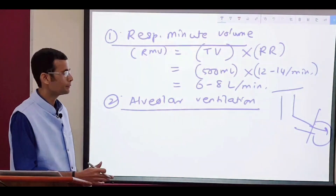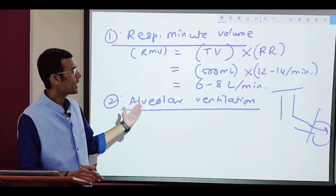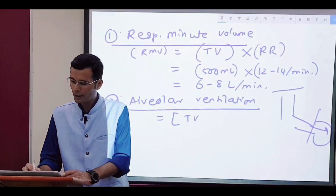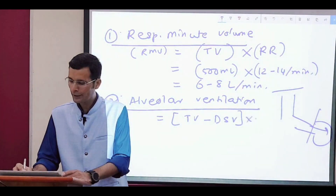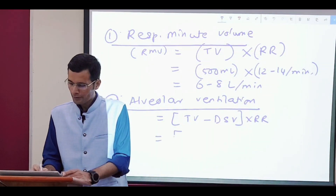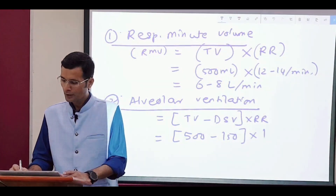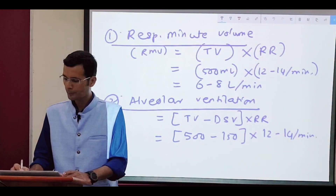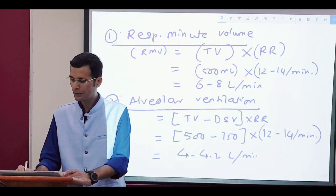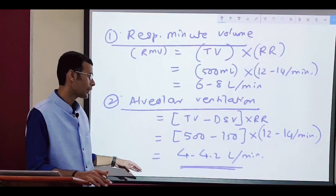So out of the 500 ml inspired, only 350 ml reaches the alveoli — 150 stays in the dead space. With each breath, 350 ml reaches the alveoli, and with 12 to 14 breaths per minute, alveolar ventilation per minute is calculated as: (tidal volume minus dead space volume) multiplied by respiratory rate. That gives roughly 4 to 4.2 liters per minute — the normal alveolar ventilation.